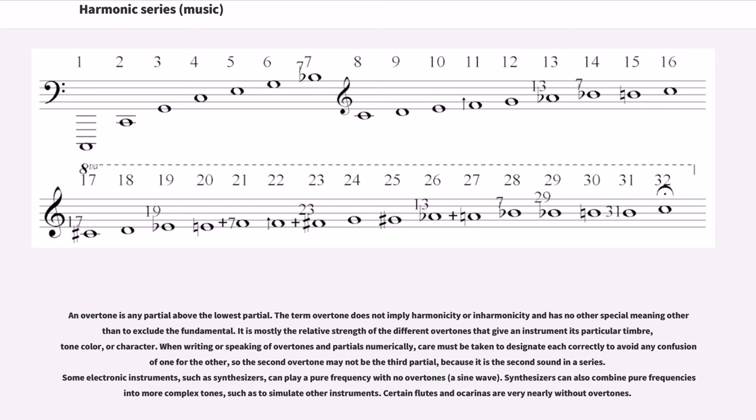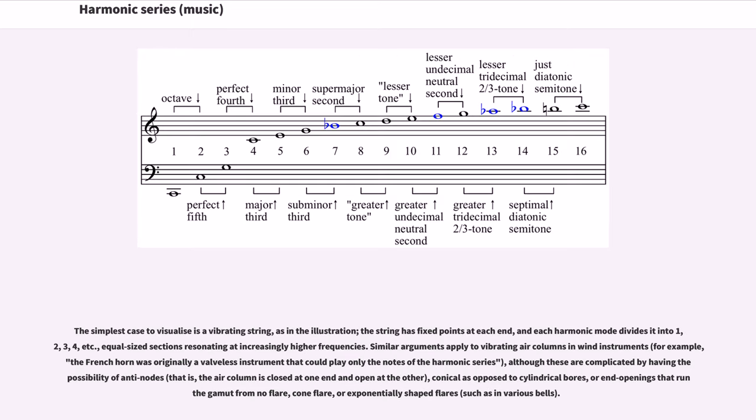Some electronic instruments such as synthesizers can play a pure frequency with no overtones, a sine wave. Synthesizers can also combine pure frequencies into more complex tones, such as to simulate other instruments. Certain flutes and ocarinas are very nearly without overtones. The simplest case to visualize is a vibrating string, as in the illustration. The string has fixed points at each end, and each harmonic mode divides it into one, two, three, four, etc. equal-sized sections resonating at increasingly higher frequencies.